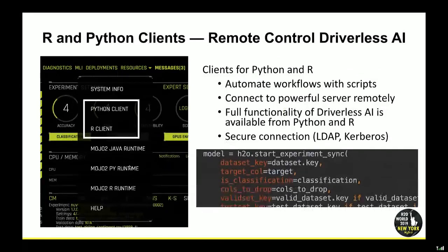Data scientists like to program in Python or R, and not everybody wants to click in a GUI. We have a full Python and R client API where you can make all these button presses from the GUI programmatically. You can say: run an experiment on this dataset, predict this column, and tell us which columns to drop. These are either synchronous or asynchronous calls. Everything is secured and compliant with regulations that banks and other industries require to ensure these APIs are safe.